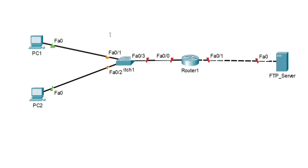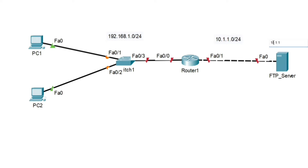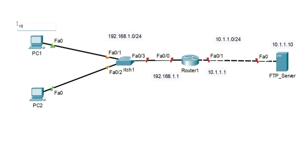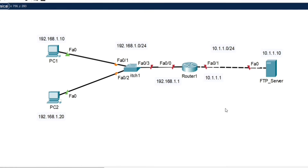In my LAN I am using the 192.168.1.0/24 network, and on the other side I am using the 10.1.1.0/24 network. The IP address of the server is 10.1.1.10, the router interface on that side is 10.1.1.1, the router LAN interface is 192.168.1.1, PC1 is 192.168.1.10, and PC2 is 192.168.1.20.